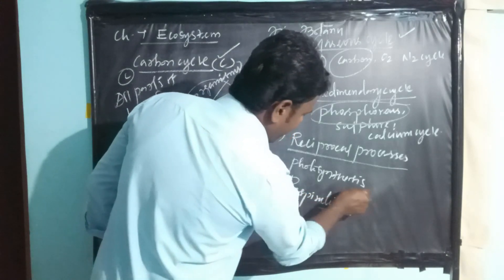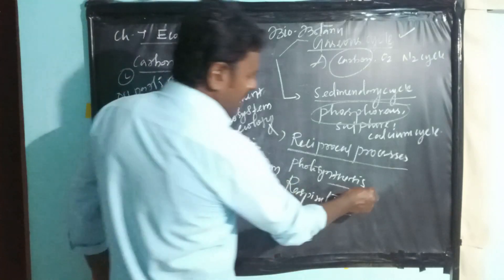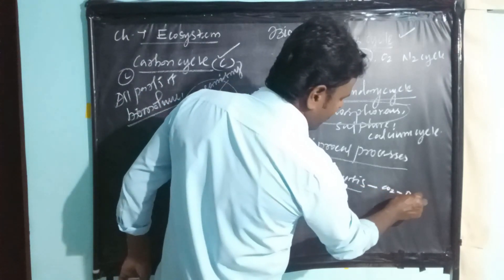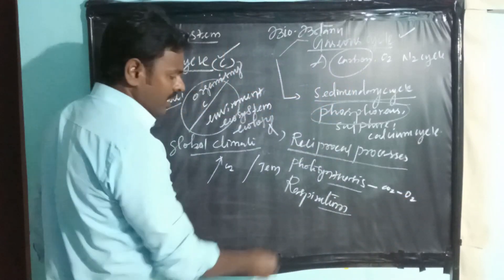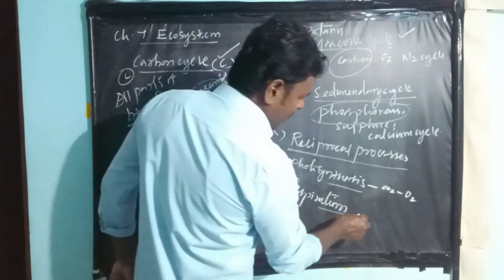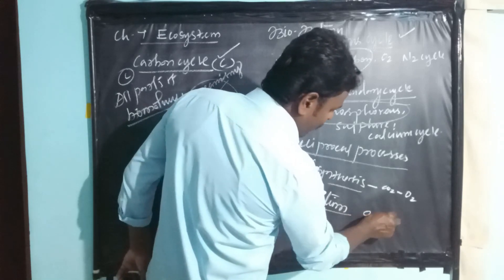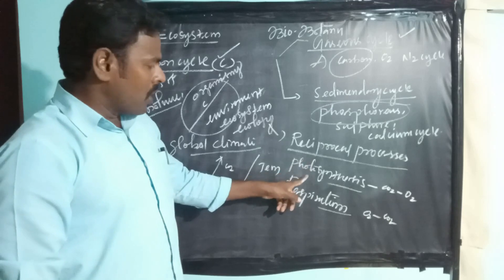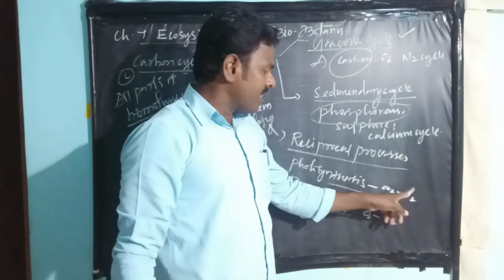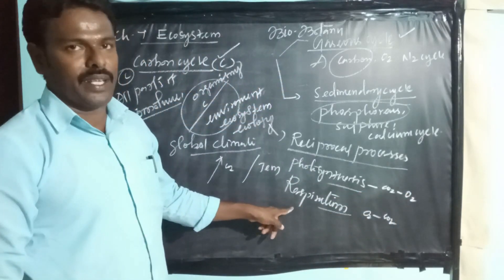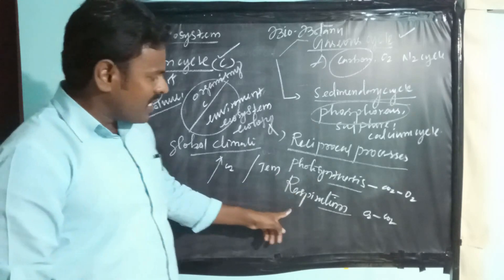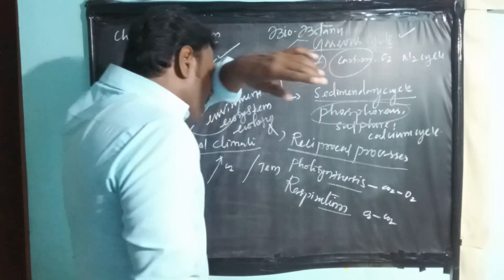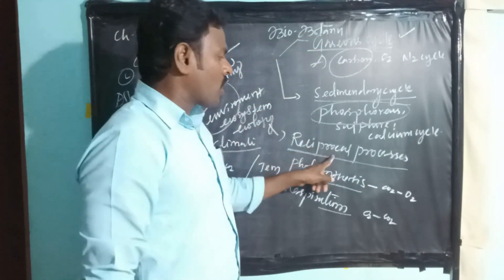As we learned at the lower class level, during photosynthesis, carbon dioxide is fixed and oxygen is evolved. During respiration, the process drops oxygen and evolves carbon dioxide. So these are reciprocal processes — photosynthesis releases oxygen, which is utilized by respiration, and respiration evolves carbon dioxide, which is utilized for photosynthesis.